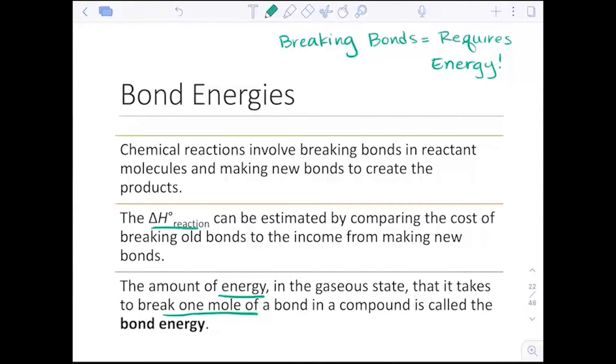Now the overall delta H of a reaction can be estimated by comparing the cost of breaking old bonds to the income of making new bonds. So what we can look at with delta H of a reaction is really just the amount of energy for bonds forming and bonds breaking. And if we know delta H is negative, that's exothermic. If delta H is positive, that is endothermic.